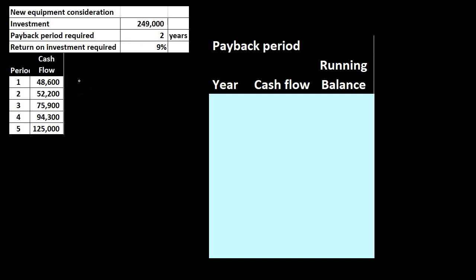The cash flows after that initial investment of $249,000 — the inflows we're going to get from that investment over periods one through five — are: $48,600 in year one, $52,200 in year two, $75,900 in year three, $94,300 in year four, and $125,000 in year five. Note that payments are not equal — this is not an annuity, and therefore the payback period calculation is not as straightforward. We have to figure out when we're going to get paid back given an uneven cash flow.